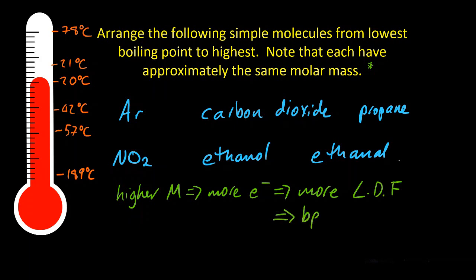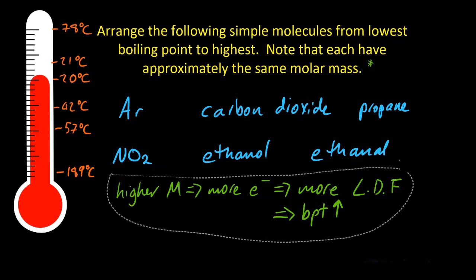Whoever has more electrons has a higher boiling point, generally. But they've all got the same electrons.